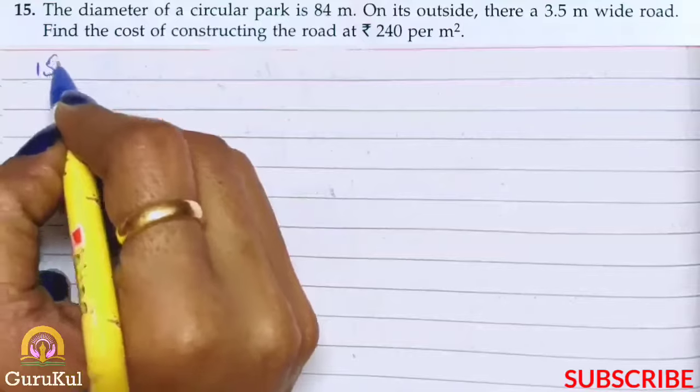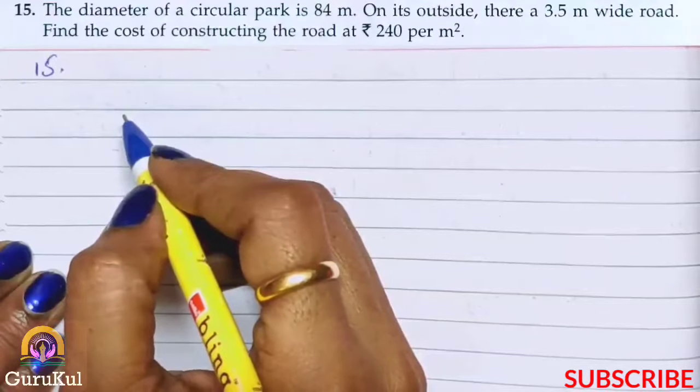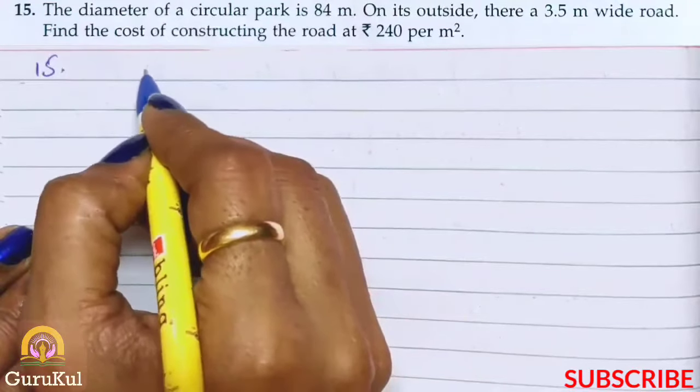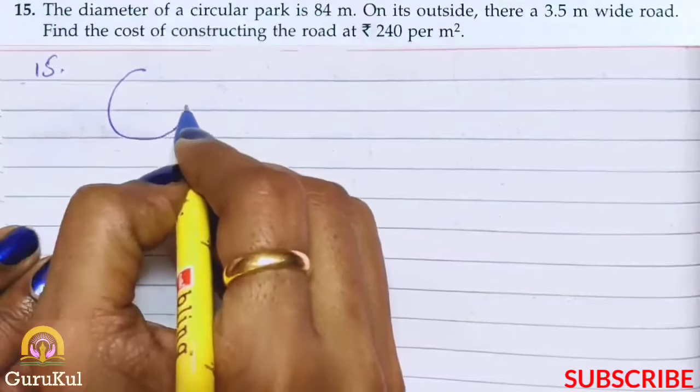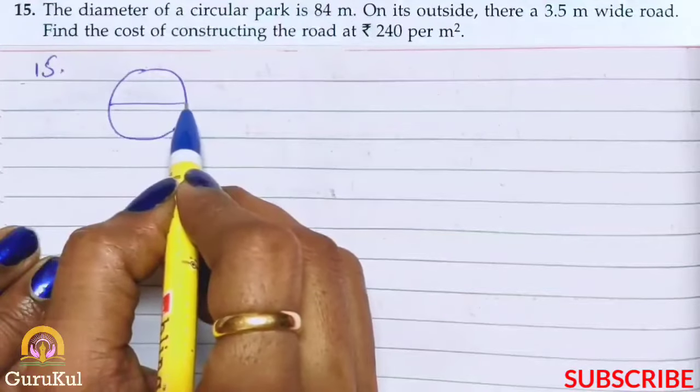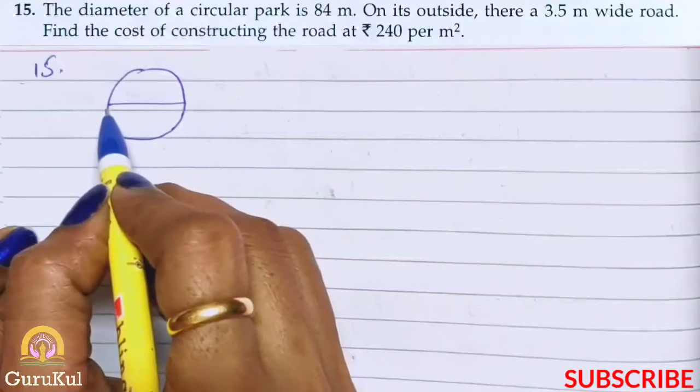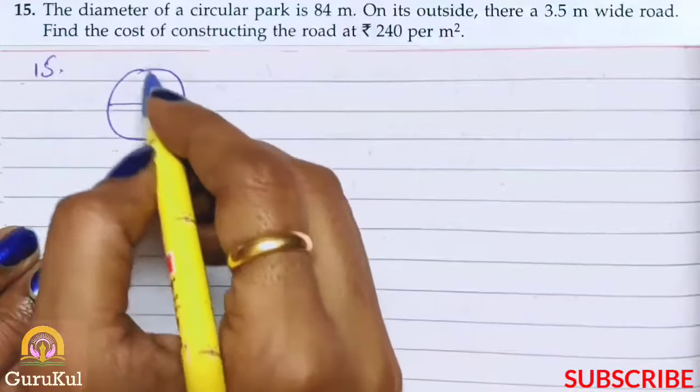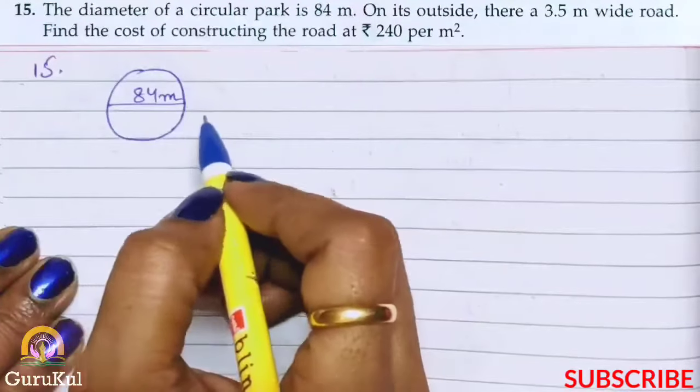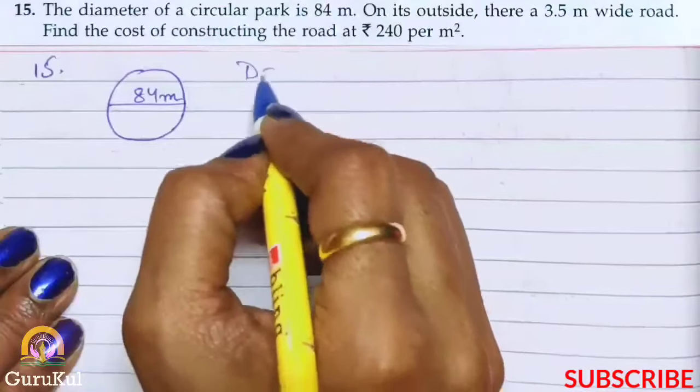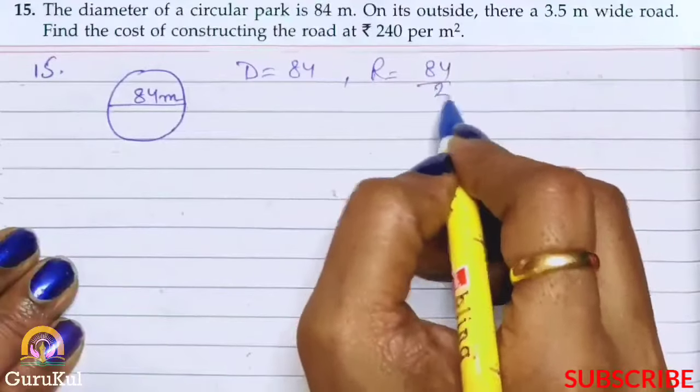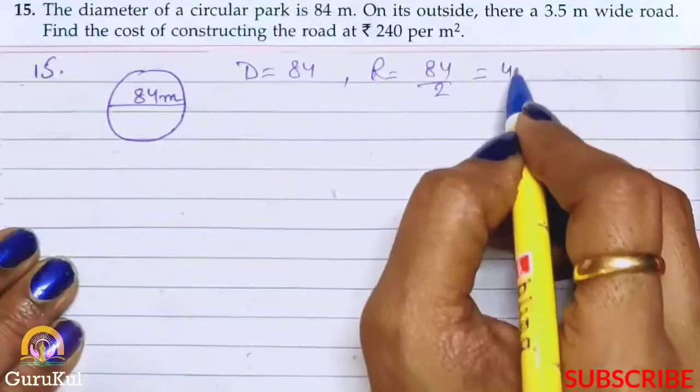Question number 15. The diameter of the circular park is 84 meters. This is the circular park. Diameter means one end to the other end touching. So this entire length is called the diameter, and it is 84 meters. So if diameter is 84, if diameter is 84, so what is radius? Half of diameter, which is 42.